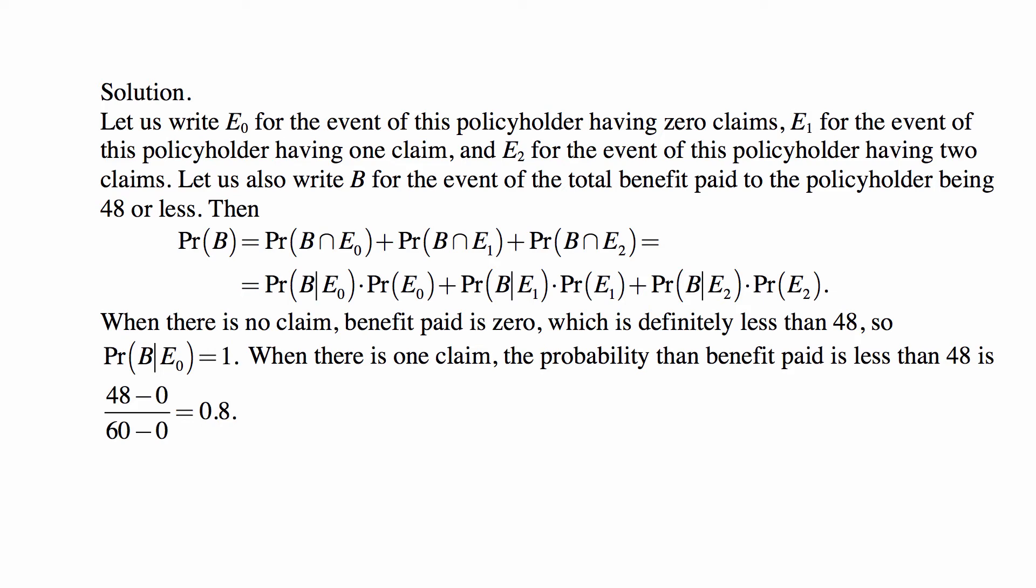Now when there is no claim, benefit paid is 0, which is definitely less than 48, so the probability that B happens given E0 is 1. When there is one claim, the probability that benefit paid is less than 48 is, well, it's uniform between 0 and 60, so the question is what fraction of the interval from 0 to 60 takes up the interval from 0 to 48, which is 48 minus 0 divided by 60 minus 0, or 0.8.